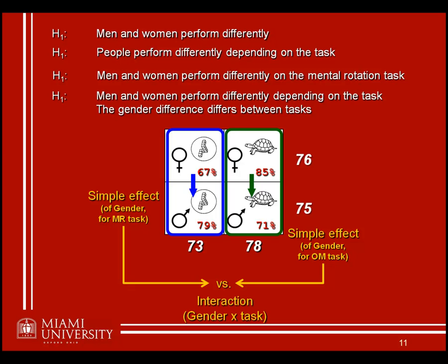We're going to do some in-class exercises to further practice identifying these different types of effects, generating them, and being able to look at a graph and identify whether they occur. That concludes this lecture. There isn't a quiz to take at this point, assuming you're watching this before Monday as you're supposed to. I do want you to have a good general understanding of these concepts, or at least be able to identify the types of questions that will need to be addressed in class for you to fully understand this material.